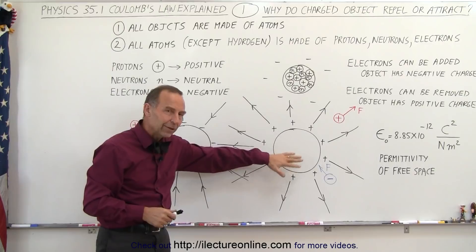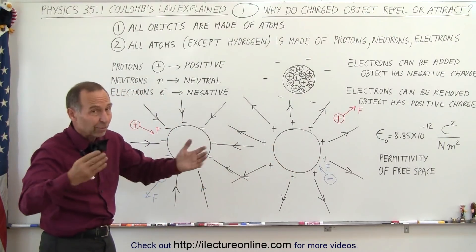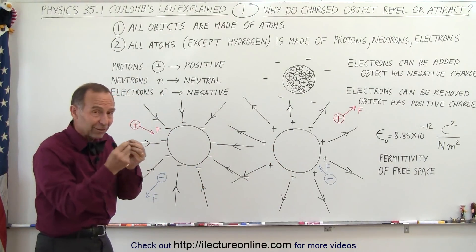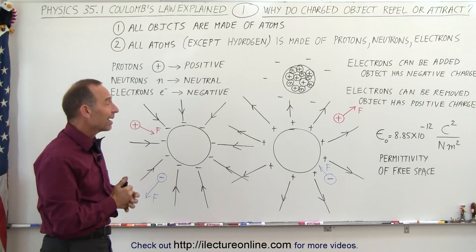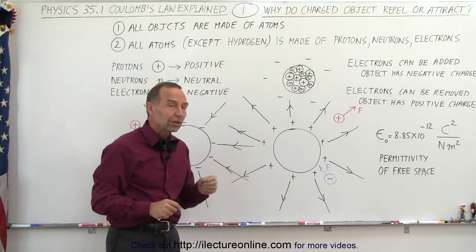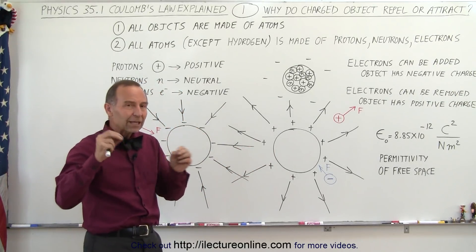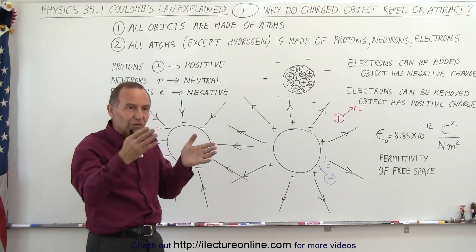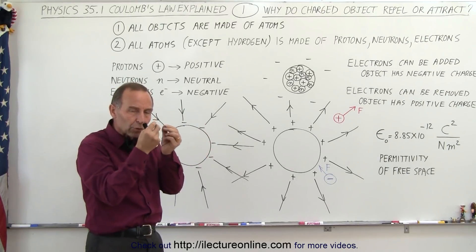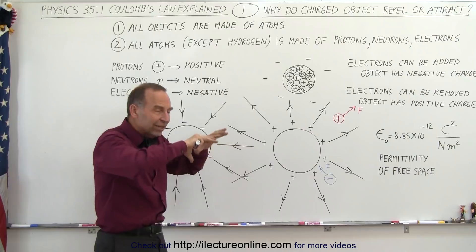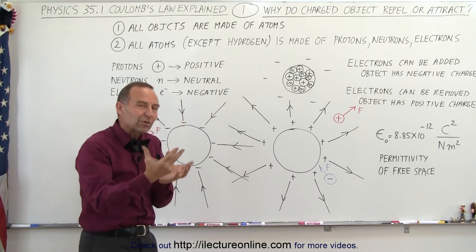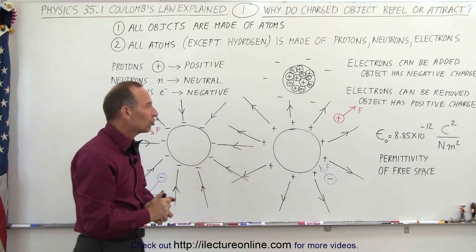Now we have to explain a little bit more later how that happens, because the protons can't move inside the object, they're all locked inside the nuclei. But by removing electrons, that means the surface has less electrons than the protons which are in the nuclei, which gives the surface of an object therefore more of a positive charge.